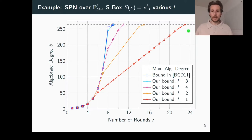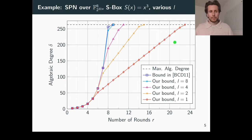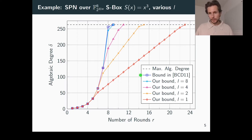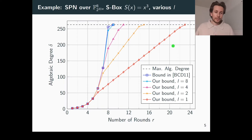You will see this also in a later slide when I give a precise formulation of our bound. Another important point is that the linear growth is all the more prominent the lower the degree of the linear layer is. The red line, for example, corresponds to a linear layer with degree 1 and exhibits the longest phase of linear growth. You can observe a gradual shift of emphasis from linear growth to exponential growth as the degree of the linear layer increases.